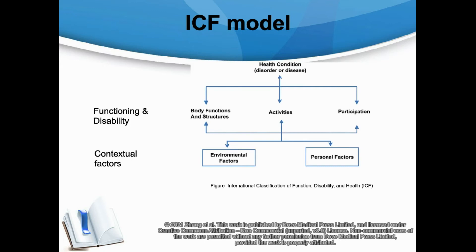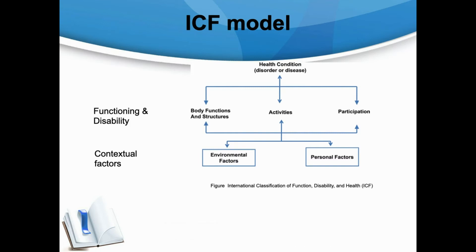The ICF is composed of two parts: functioning and disability, and contextual factors. Functioning and disability covers body function and structure, and activity and participation. Contextual factors consist of environmental factors, which encompass physical, social and attitudinal categories, and personal factors that include gender, age, educational level and so on. Personal factors with various categories are not included in the current ICF version.